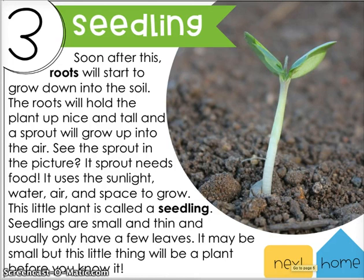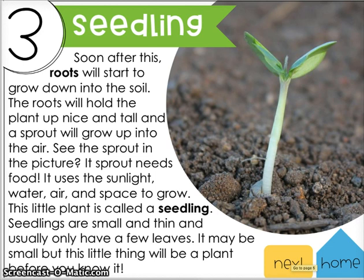Stage three is the seedling. Soon after germination, roots will start to grow down into the soil. The roots hold the plant up nice and tall, and a sprout will grow up into the air. See the sprout in the picture? The sprout needs food, so it uses sunlight, water, air, and space to grow. This little plant is called a seedling. Seedlings are small and thin and usually only have a few leaves, but it will be a full plant before you know it.